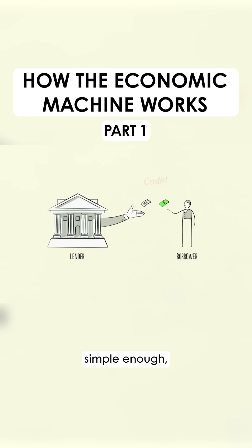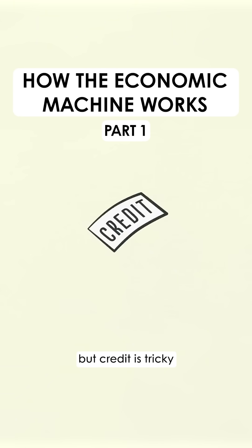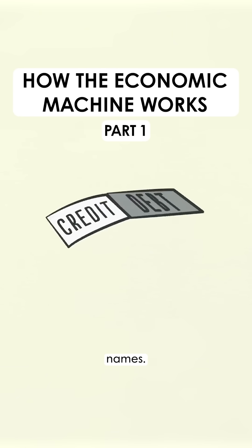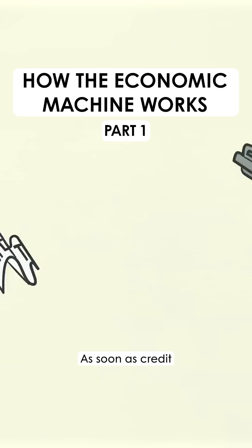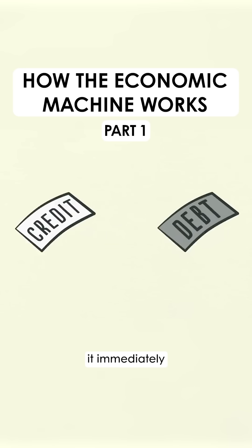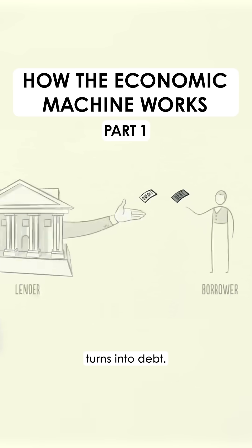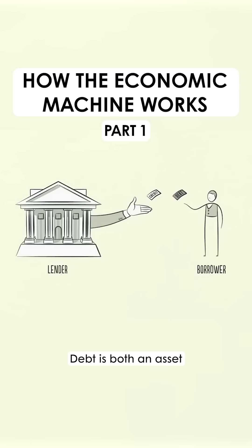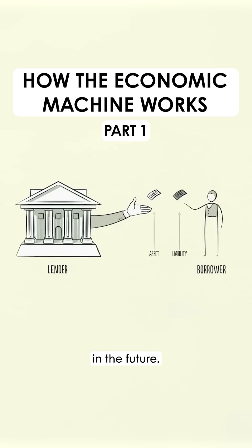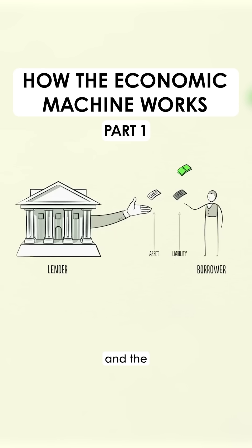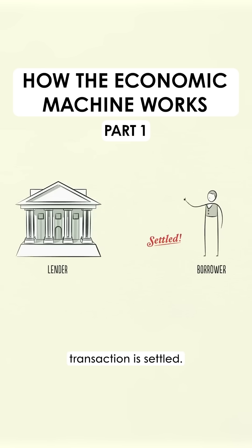Credit is tricky because it has different names. As soon as credit is created, it immediately turns into debt. Debt is both an asset to the lender and a liability to the borrower. In the future, when the borrower repays the loan plus interest, the asset and the liability disappear and the transaction is settled.